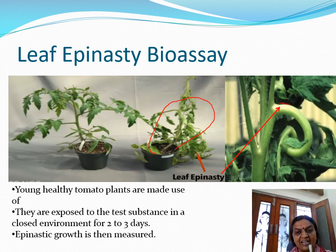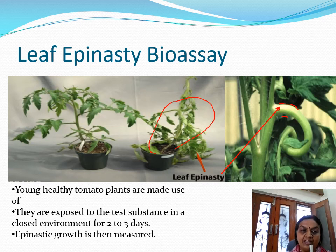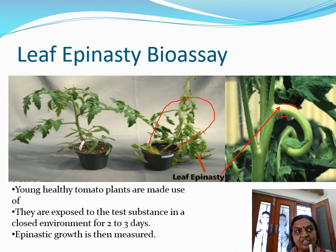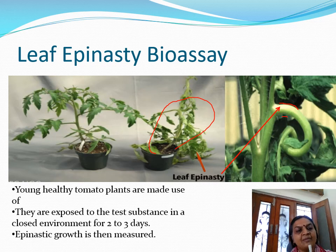There is more growth on the abaxial surface as compared to the lower surface. Young, healthy tomato plants are used for this assay and are exposed to the test substance in a closed environment for two to three days. A closed environment is used because this plant growth regulator is gaseous. The plant material from which ethylene diffuses is placed along with the tomato plant in a closed environment, such as under a bell jar. After two to three days of such exposure, the epinastic growth is measured.